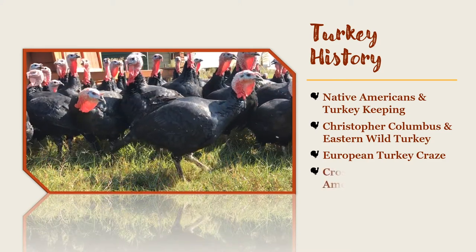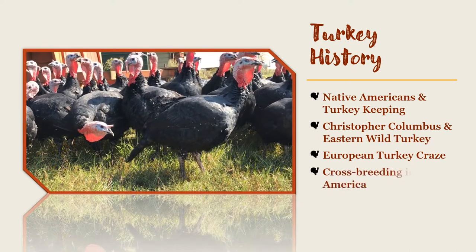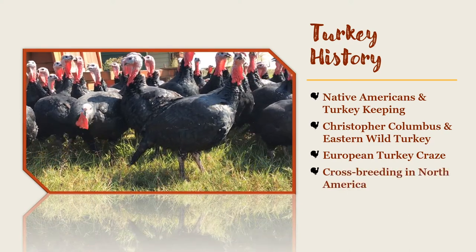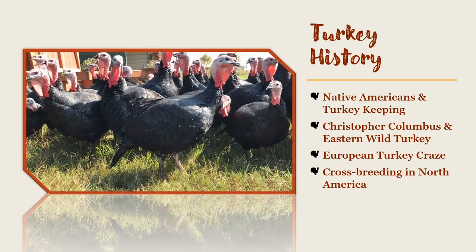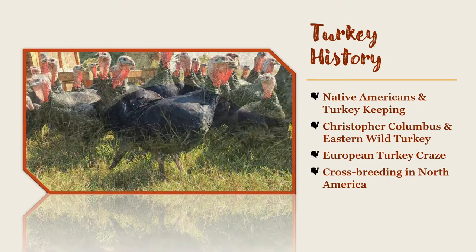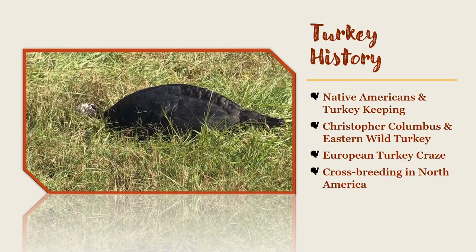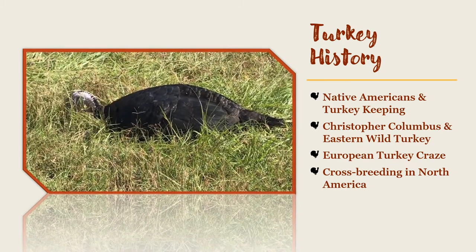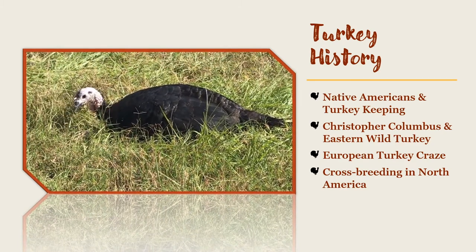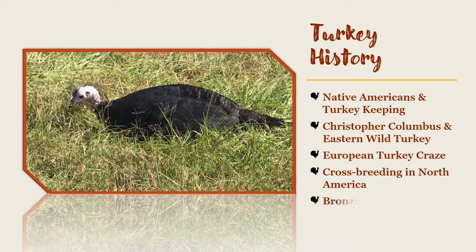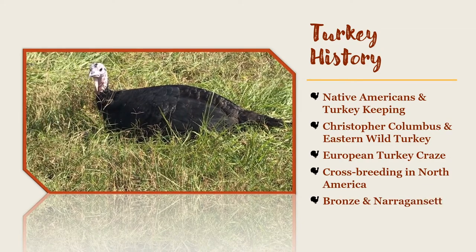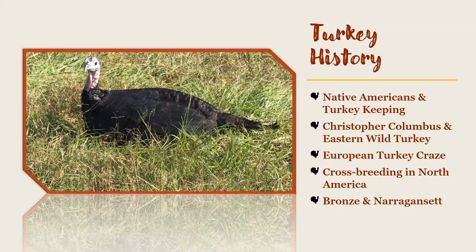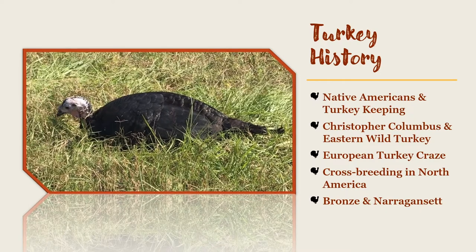The turkey returned to North America with the settlers who came to New England. These settlers began to crossbreed the turkeys they brought with them from Europe with the eastern wild turkey. This mainly took place around Massachusetts, Connecticut, and Rhode Island. Two breeds that you find in the American Poultry Association today came out of these crossbreeding efforts: the Bronze and the Narragansett.